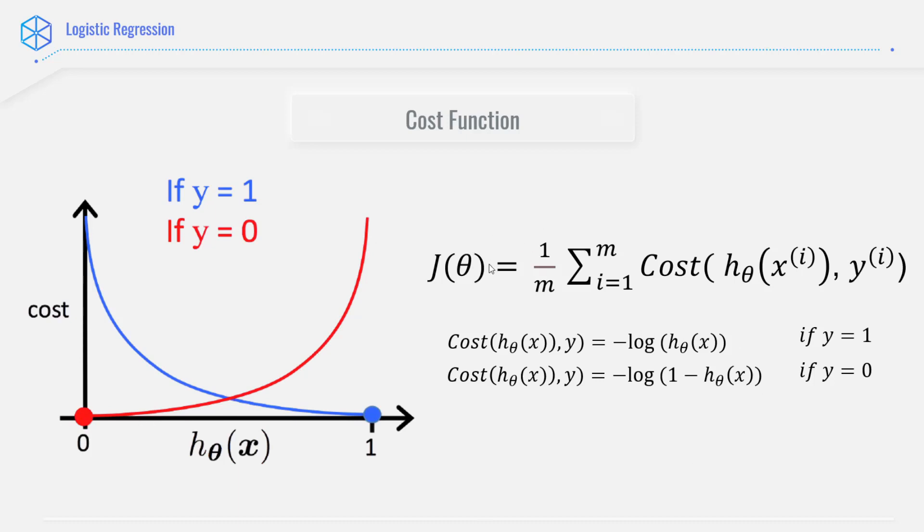So let's go with this equation, J(theta) equals 1 by m, summation of i goes from 1 to m, cost of h of theta x comma y of i. Now this J(theta) is our cost function.